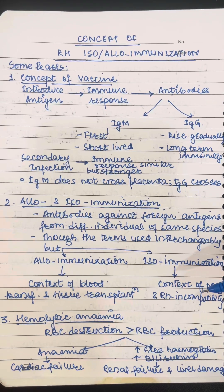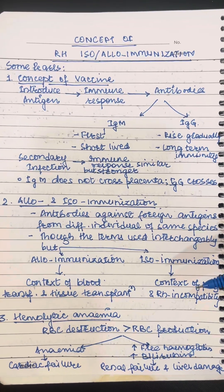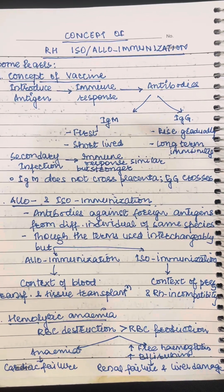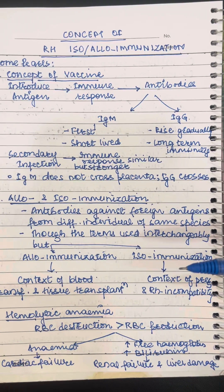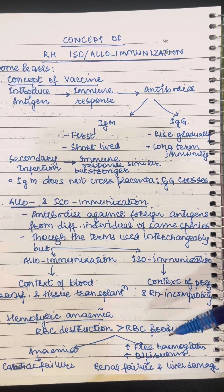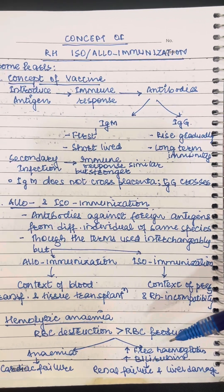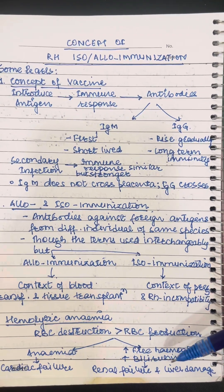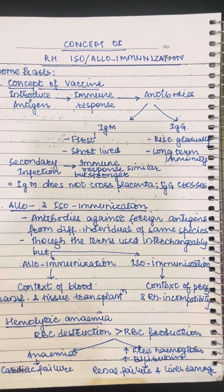You also know something about hemolytic anemia. It is when RBC destruction is more than and faster than RBC production. This leads to anemia with its complications and cardiac failure, increase in the levels of free hemoglobin and increased bilirubin which may lead to renal failure and liver damage. With this preliminary knowledge let's try to understand the concept of RH immunization.